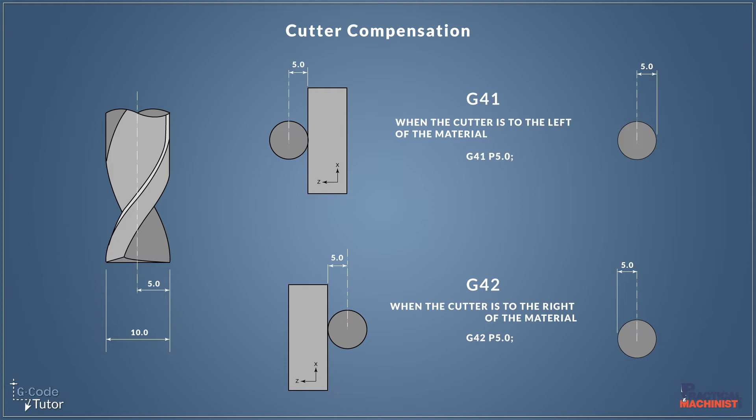So if we're offsetting our cutter to the left of the material, we would use G41 to tell the machine the direction we wish our Cutter Compensation to be applied. And if we're offsetting our cutter to the right of the material, we would use G42. You often find G42 is more common in turning and G41 is more common in milling, due to climb milling and the direction of cuts on a lathe.